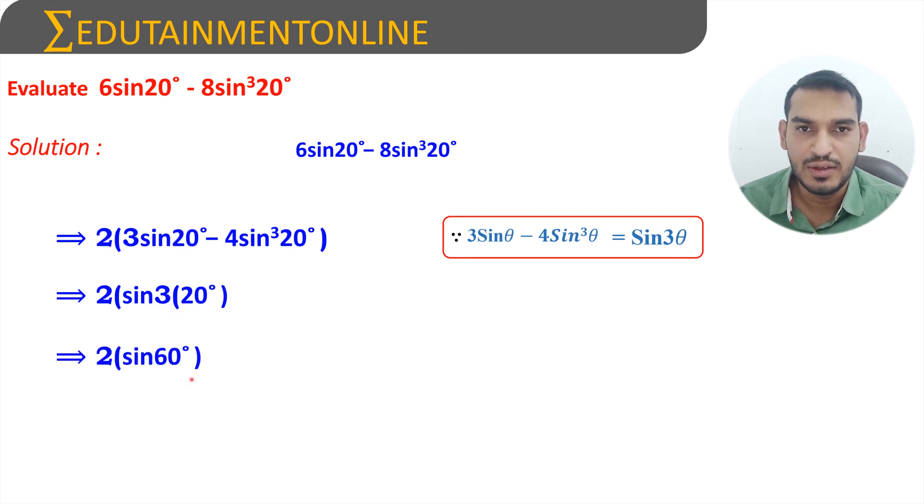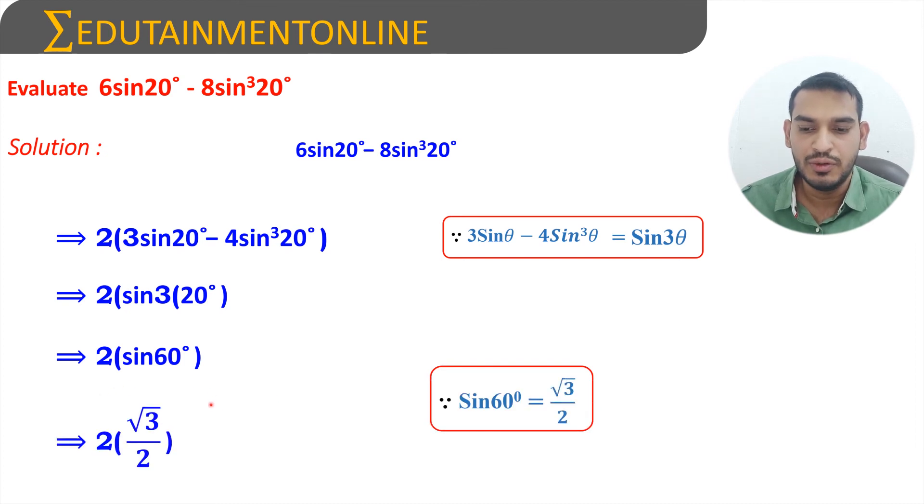Sine 60 degrees is a standard trigonometric ratio. We know that sine 60 degrees equals root 3 by 2. Therefore 2 into root 3 by 2, now 2 and 2 will get cancelled, so the answer is root 3. Therefore the value of 6 sine 20 degrees minus 8 sine cube 20 degrees is root 3.